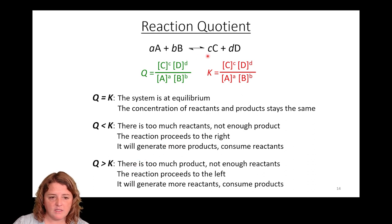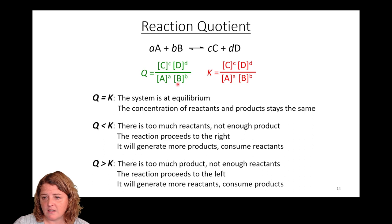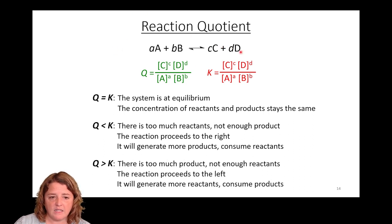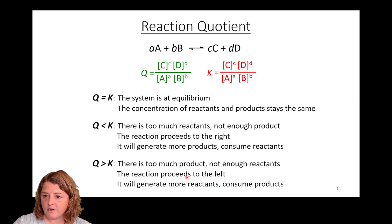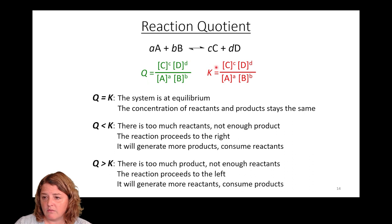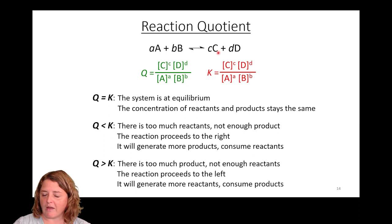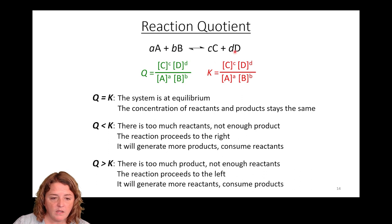Conversely, if Q is greater than K, you've got too many products — a numerator that's too big — or not enough reactants, a denominator that's too small. Your reaction is going to proceed to the left: C and D will react to make A and B, and it will continue until it reaches equilibrium, assuming you have enough to get there.